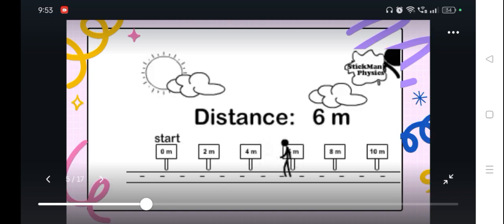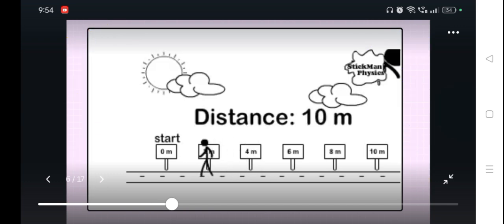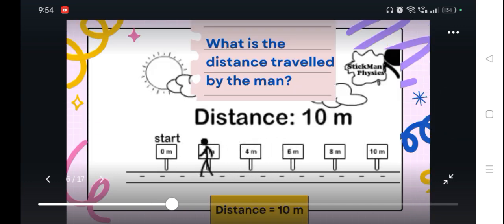So let us further analyze this concept using this diagram here. As you can see, the man walks forward covering 6 meters. After 6 meters, he decided to go back and stops at 2 meter mark away from the starting point. So how are we going to compare distance from displacement?